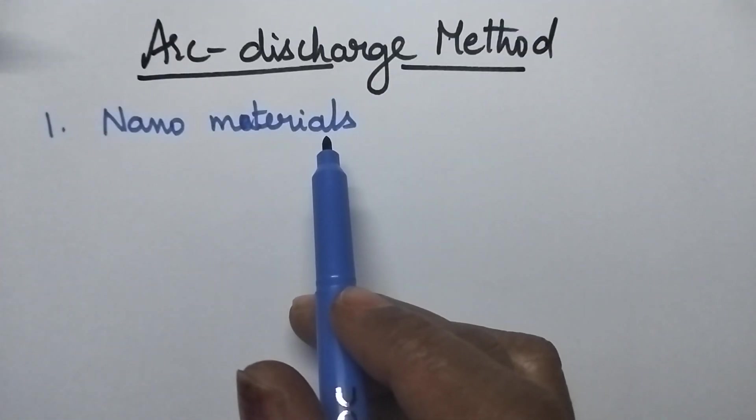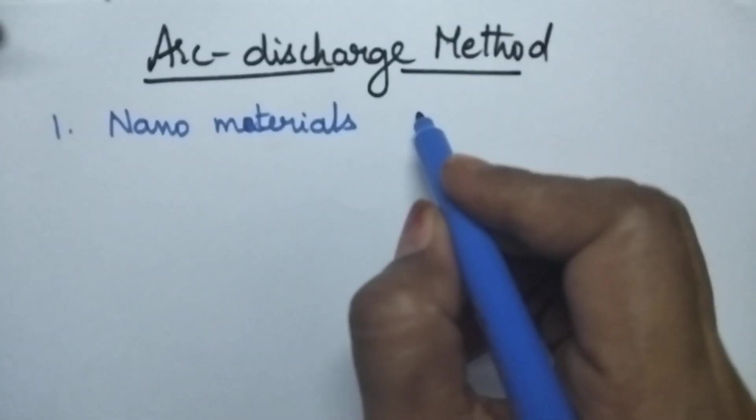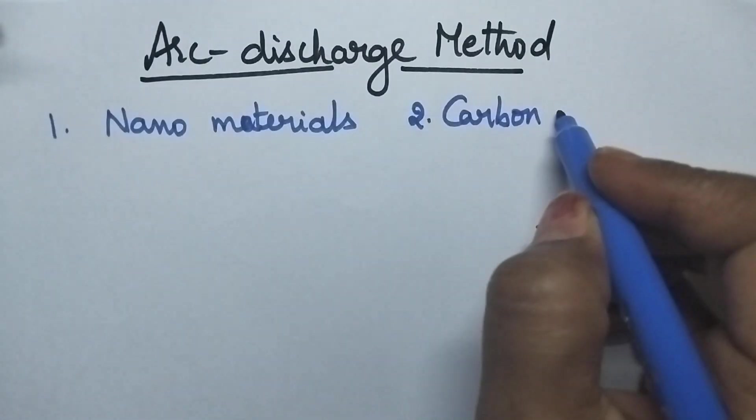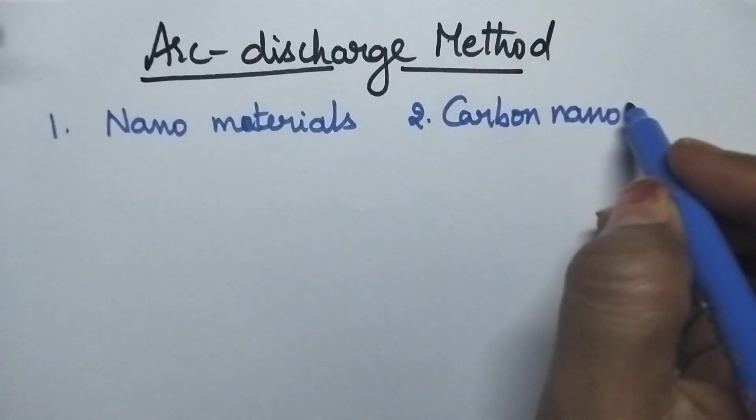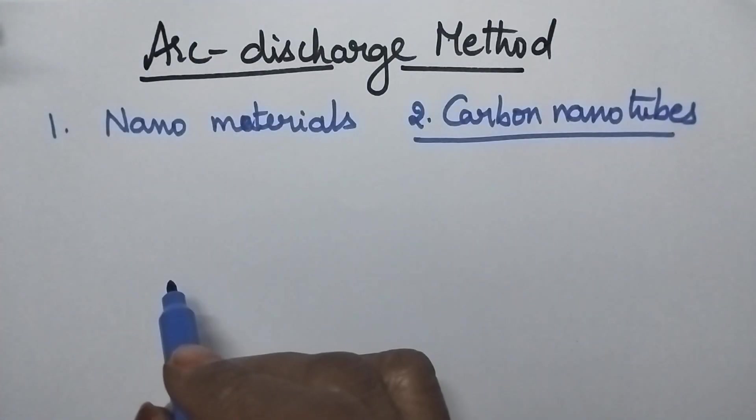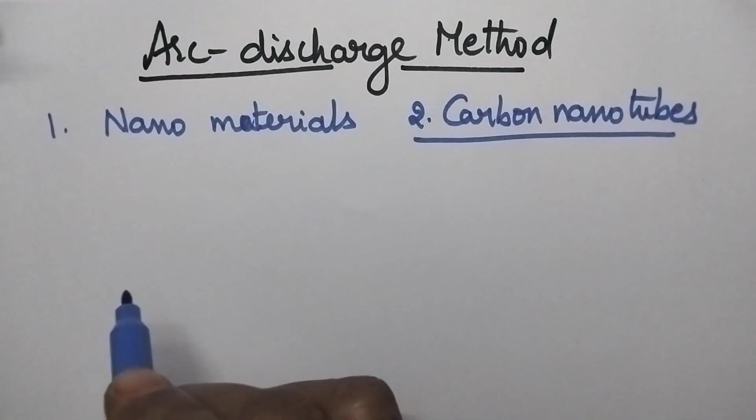This method is highly useful for the preparation of nanomaterials and carbon nanotubes. Carbon nanotubes can be prepared through arc discharge method, where two carbon rods are separated at a distance of 1mm in an inert environment.